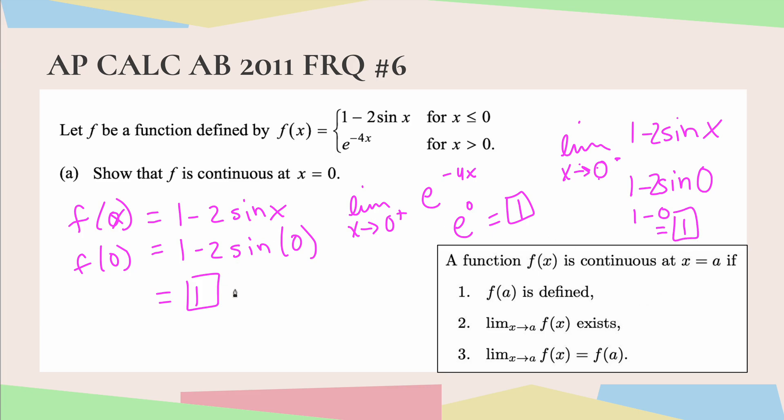So now we can state that f of x is continuous at x equals 0 because the limit from the right equals the limit from the left equals the function output value at 0. They all equal 1. All right, excellent.